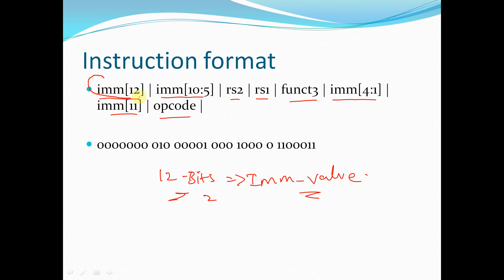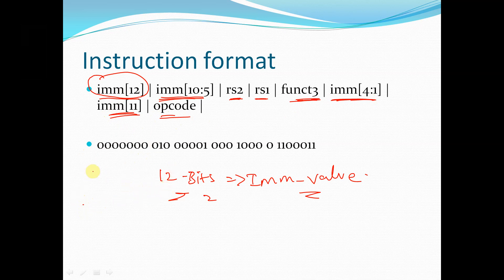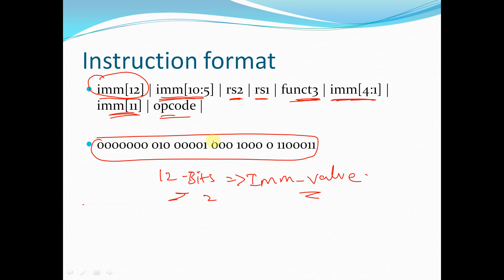We provide immediate bits 10 down to 5 first, then RS2, RS1, funct3, immediate bits 4 down to 1, immediate bit 11, and opcode. This is the instruction format of the B-type branch instruction. If we convert this into binary, the binary representation would look like this, where RS2, RS1, and the immediate value are provided. Funct3 here is 100, which differentiates between instruction types such as BEQ, BNE, and so on. We will decode this binary instruction in hardware to decide what type of branch instruction it is.